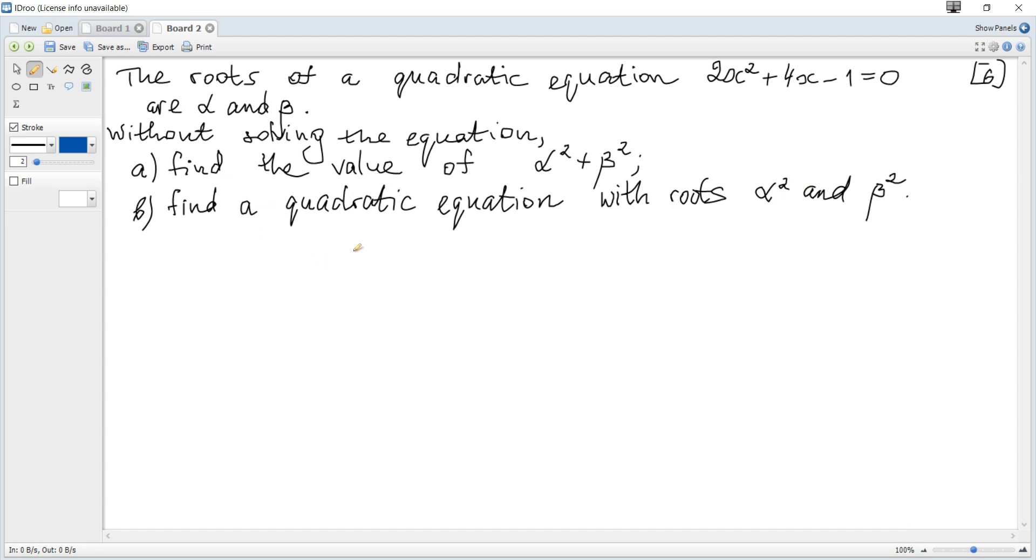We can apply the sum and product rule for a quadratic equation. The sum of roots α + β equals -b/a, so it's -4/2, which is -2. And the product αβ equals c/a, so it's -1/2.